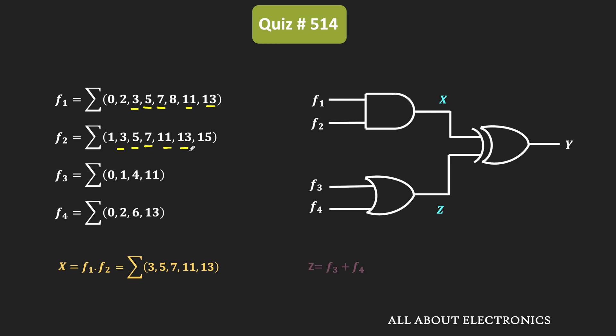Similarly, if we see the output z, then that is equal to F3 plus F4. And as you know, the output of the OR gate is 1 when any one of the input is 1. That means here, this output z will contain all the minterms which are present in the function F3 and F4. That means here, it will contain the minterms 0, 1, 2, 4, 6, as well as 11 and 13.